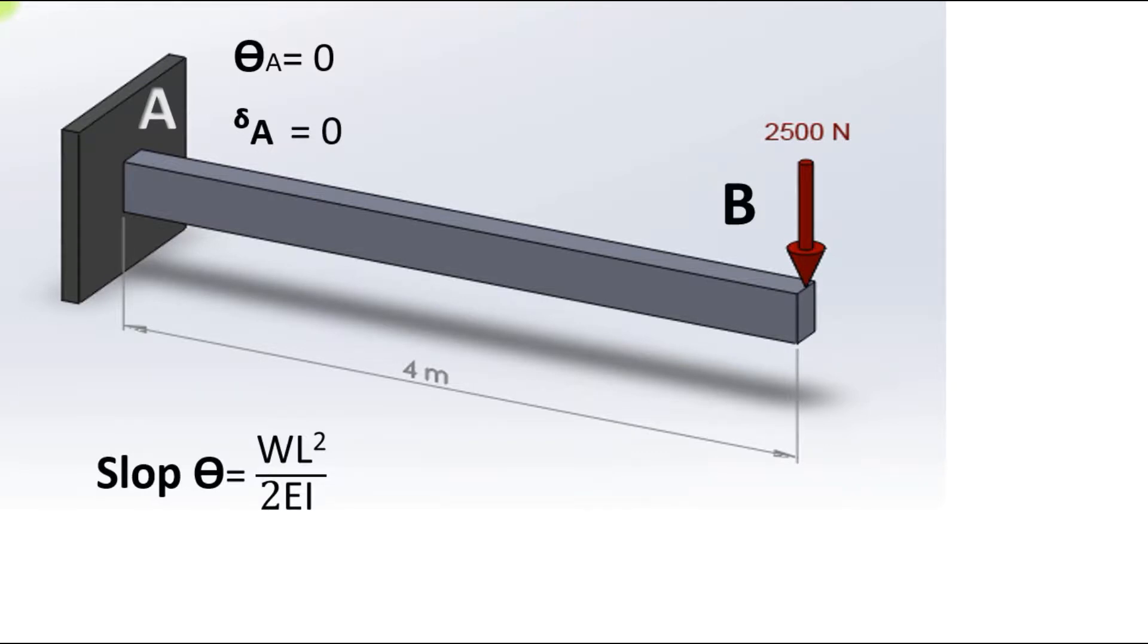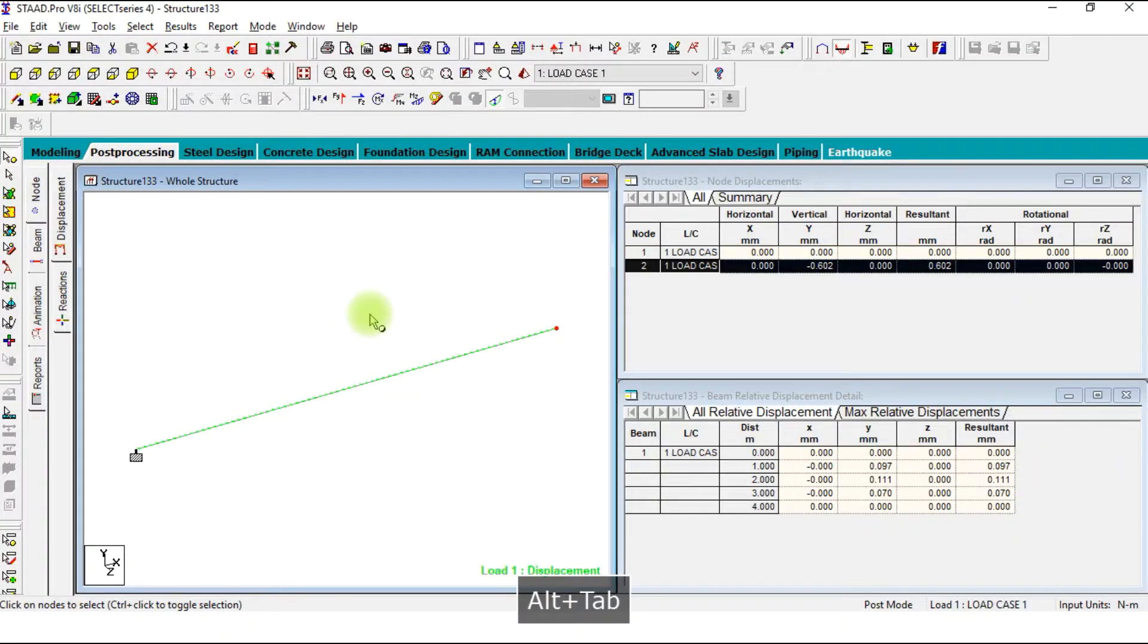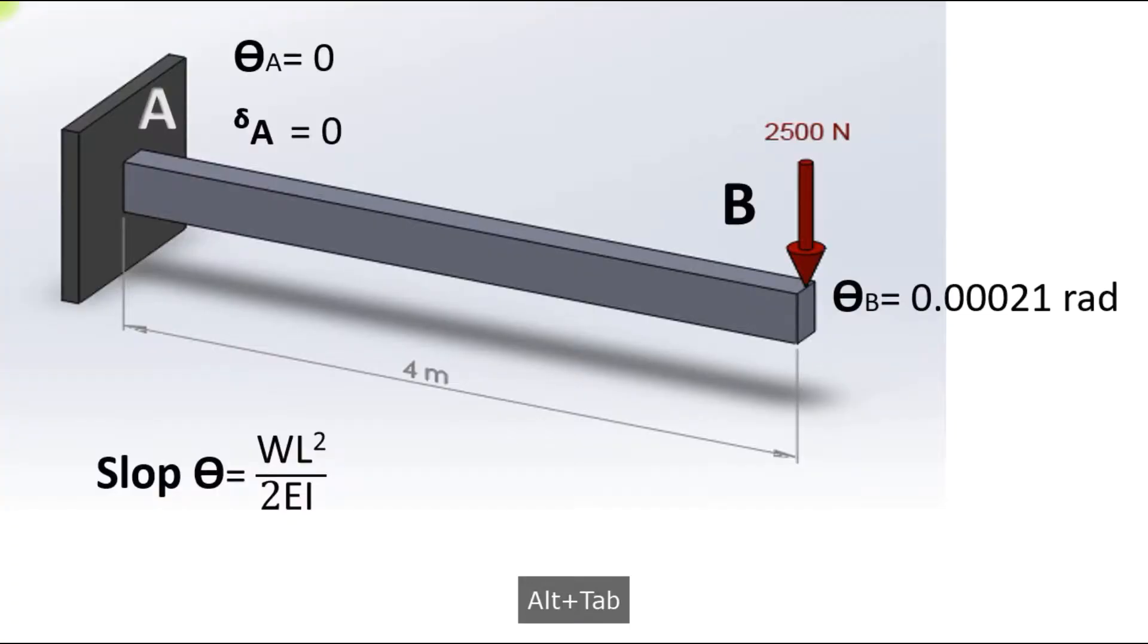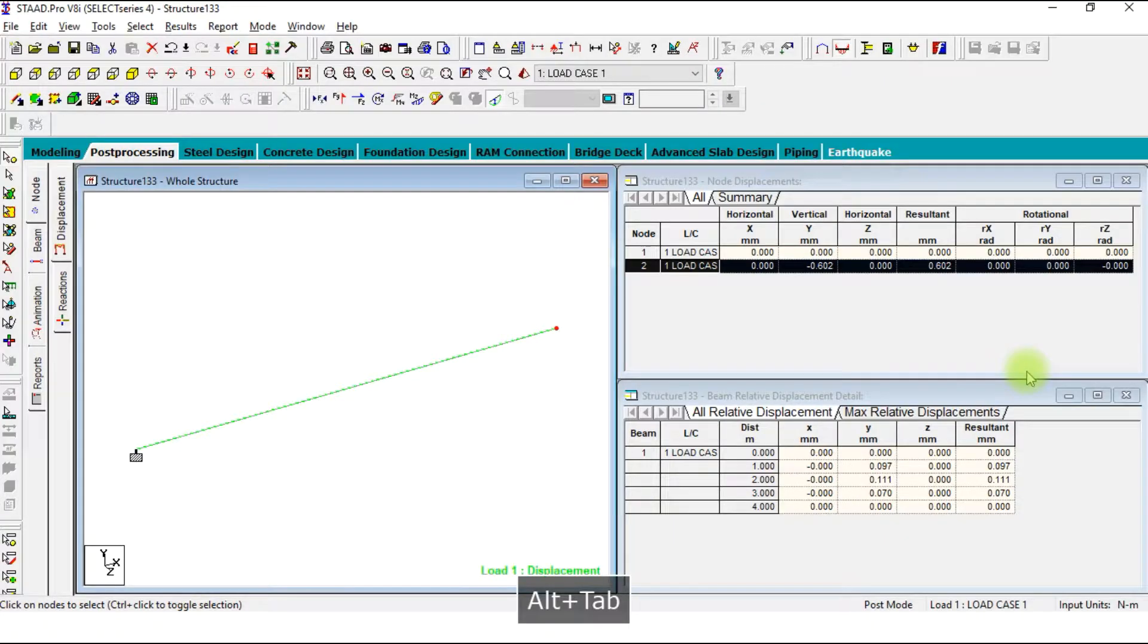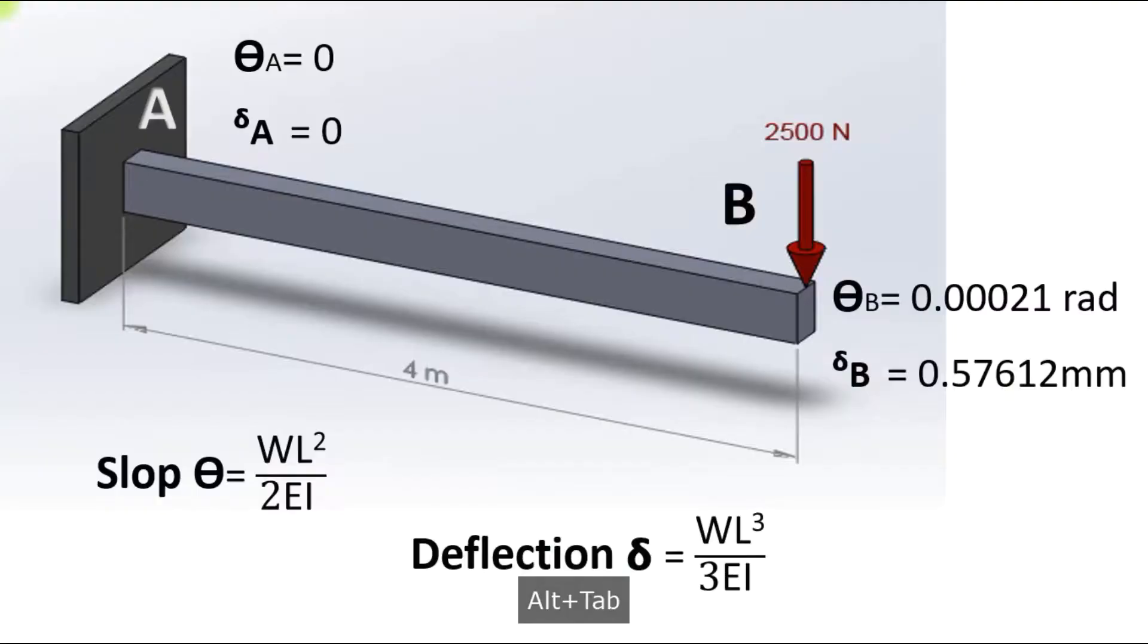As we know, the slope of cantilever beam at free end is WL squared by 2EI, so 0.00021 radians. In our case there is 0.0002, there is a limit of digits, so it matches. The deflection will be WL cubed by 3EI, so in our case 0.576. In STAAD Pro there is 0.602, there is some minor gap.